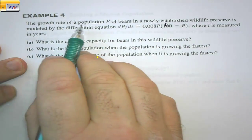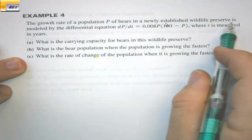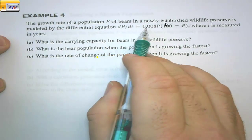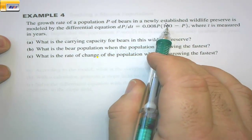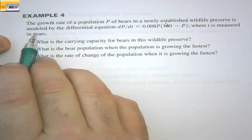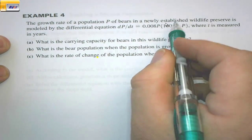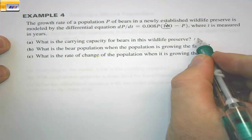Example 4: The growth rate of a population P of bears in a newly established wildlife preserve is modeled by the differential equation dP/dt = 0.008P(100 - P), where t is measured in years. What is the carrying capacity for bears in this wildlife preserve? Well, it happens to be 100 bears.